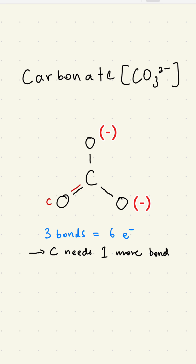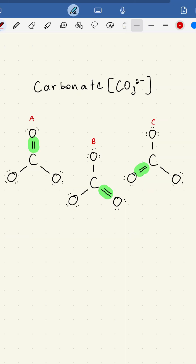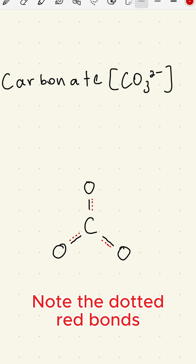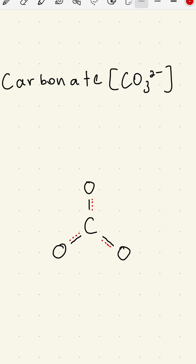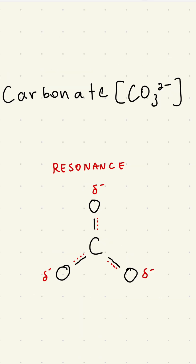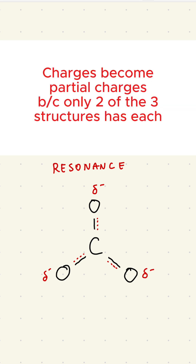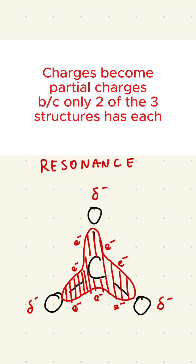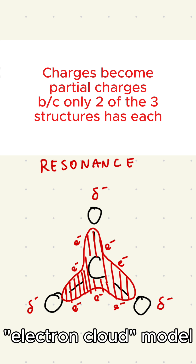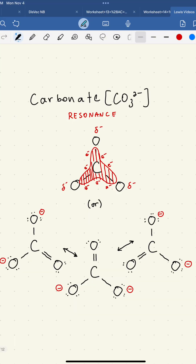The right answer is actually all three. Here's what all three of them look like side by side in the complete Lewis structure. The resonant structure comes when we take the average of the three structures, which looks like this. We'll make all the resonance double bonds into dotted partial bonds and turn the charges into partial charges. For a more realistic picture, we can think of the electrons floating in a cloud in between all three bonds, but ultimately, however you want to draw it is okay.